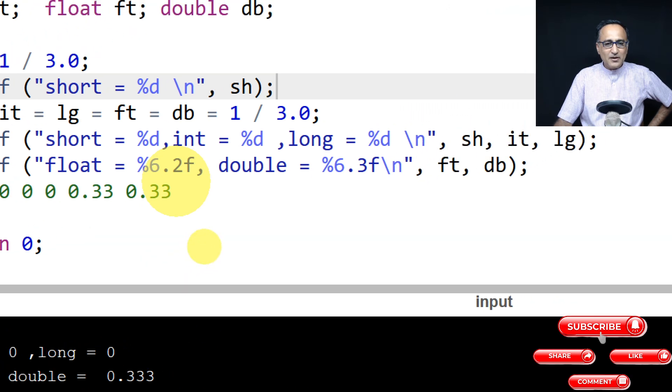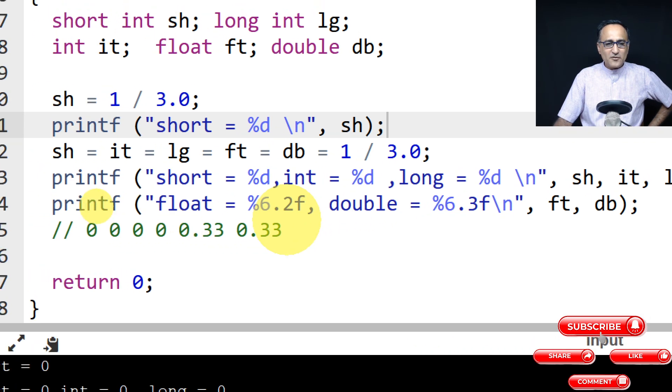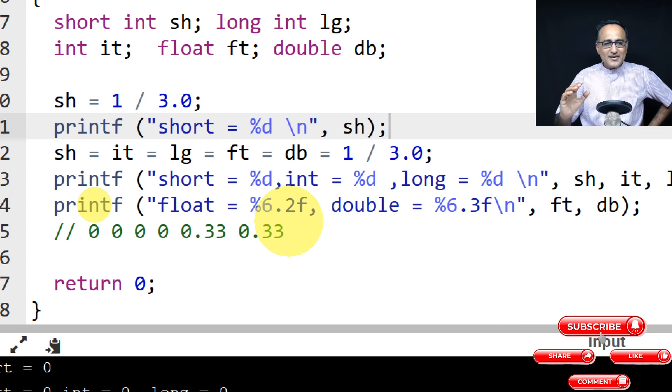Since I have given double as 6.3f format, this code should give you a decent idea about how data gets truncated when you copy it from float to integer.